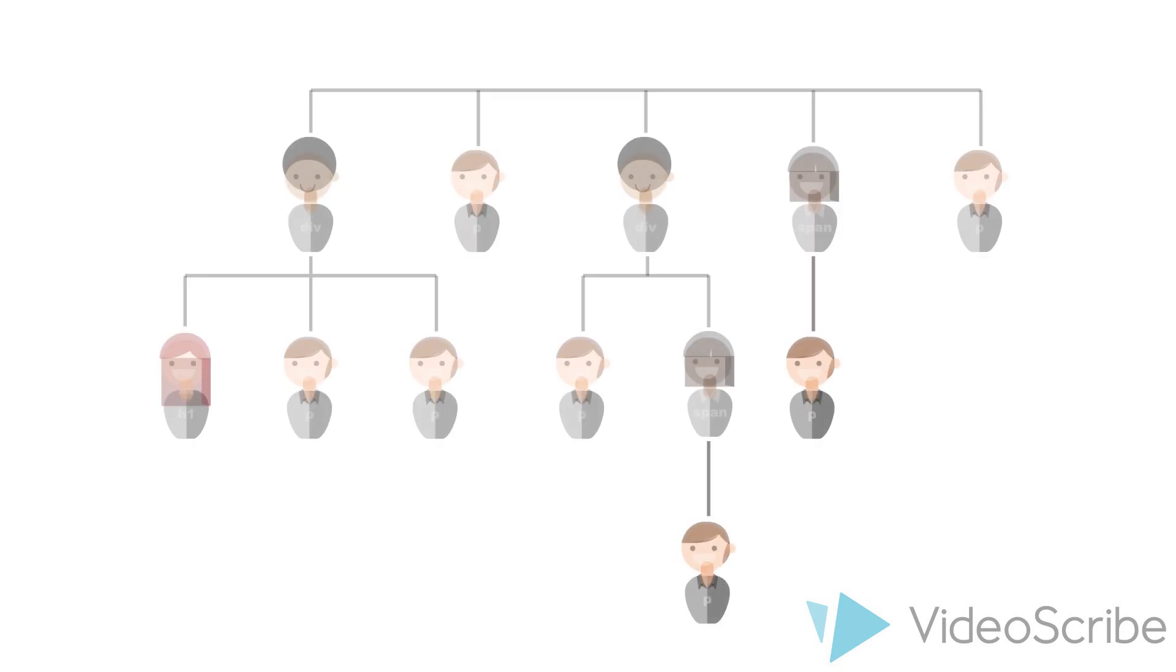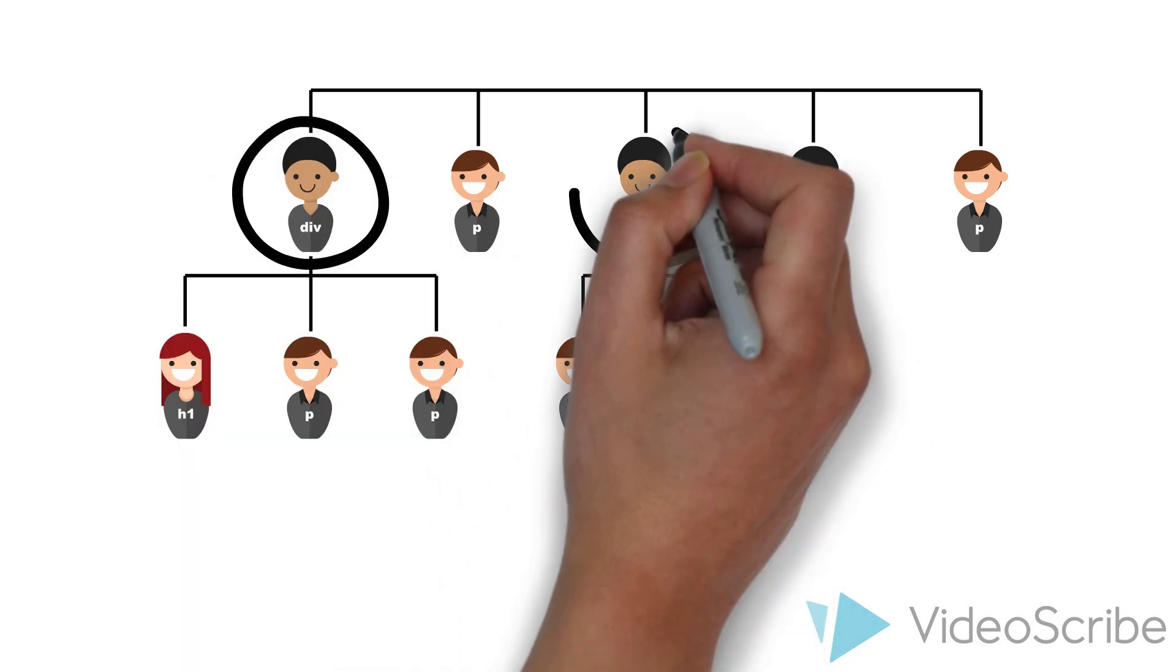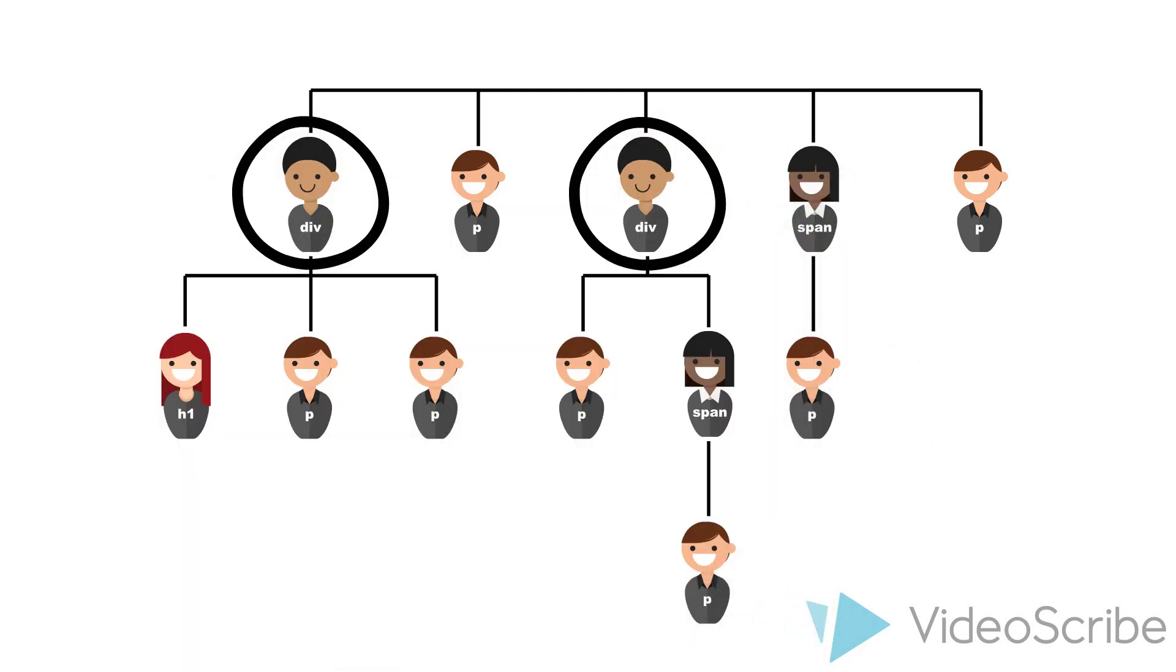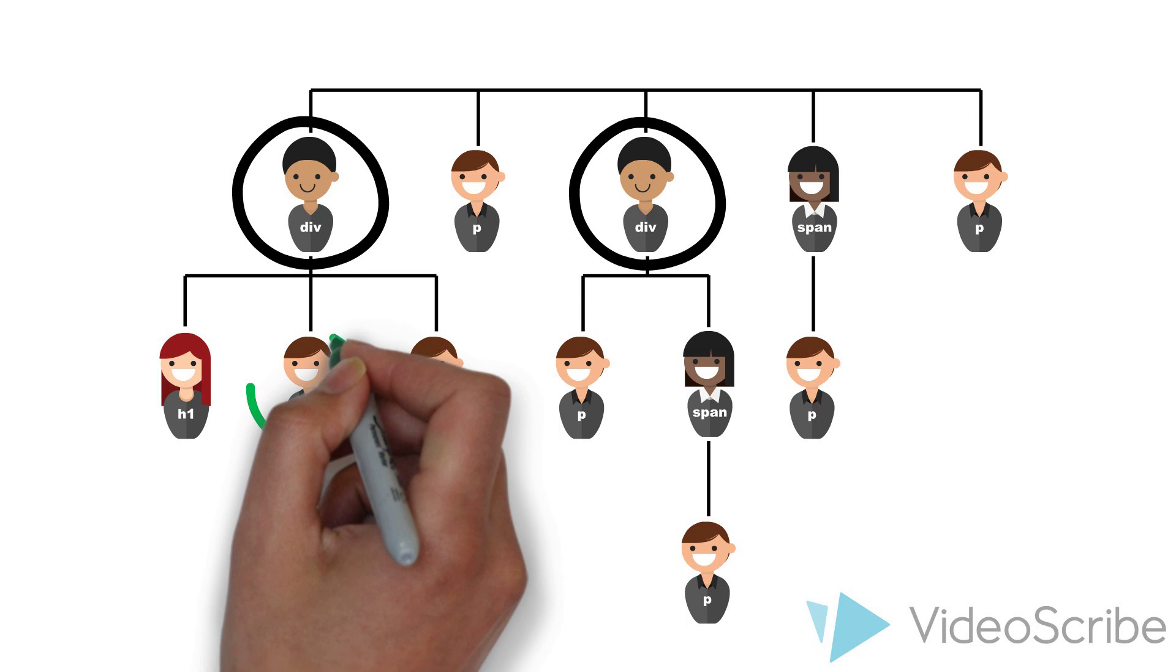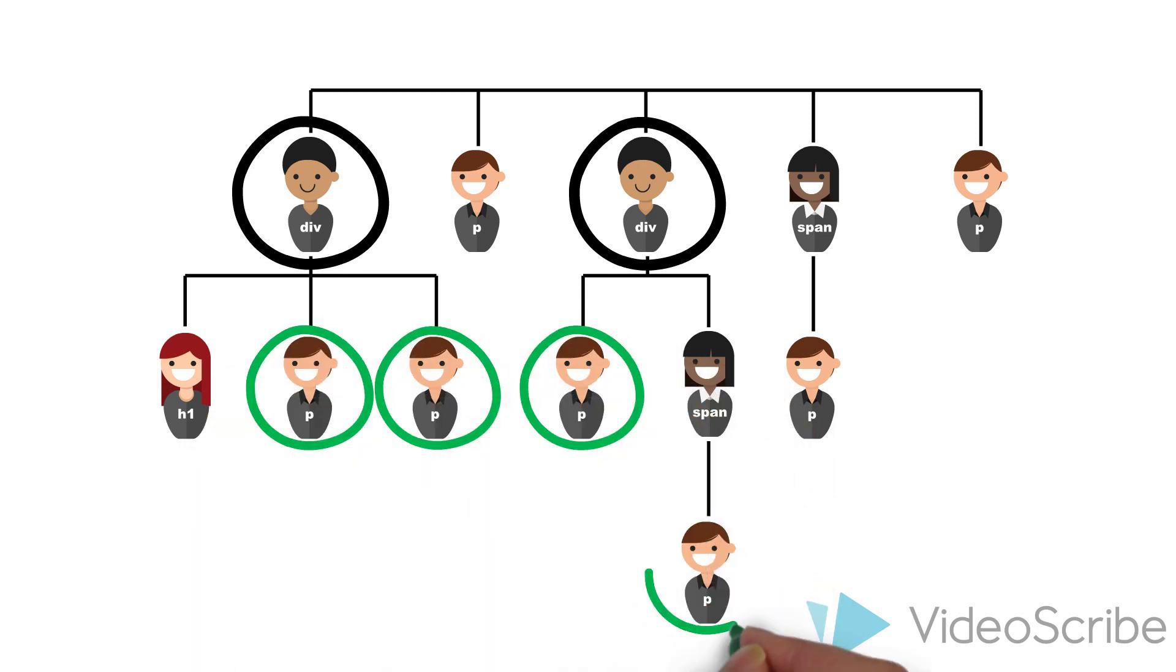Looking at our family tree, this means that first we search for all persons called div, and then select everyone who is called p and is a child, grandchild, great grandchild, and so on. Now, per our example, all those selected will turn green.